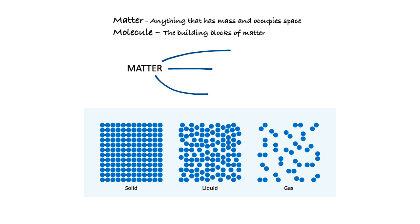Matter exists in three forms: solid, liquid, and gas. In a solid, the molecules are very tightly packed close to each other. For example, if a piece of clothing is size 32, it will stay size 32 forever - it will never grow or become smaller. This is because it is a solid and the molecules are tightly packed, so you cannot make it bigger or smaller.